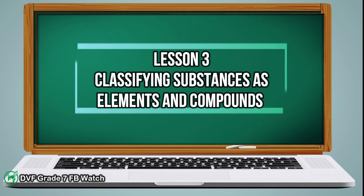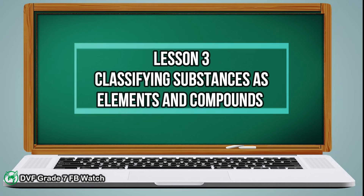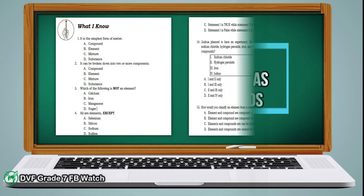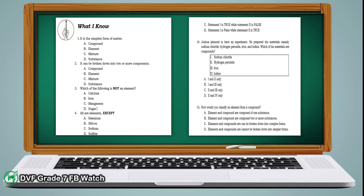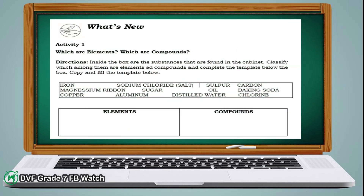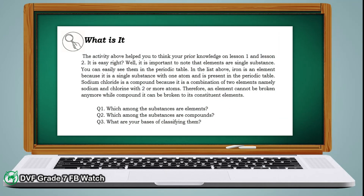Let's proceed to lesson 3, which is about classifying substances as elements and compounds. Let's start with 'What I Know' — from numbers 1 to 15, choose the letter of your answer. For 'What's New,' please answer activity number 1: classify the given substances found inside the box as either elements or compounds. Let's proceed to 'What Is It.' Based on activity number 1, answer the guide questions: number 1 — which among the substances are elements? Number 2 — which among the substances are compounds? Number 3 — what are your bases of classifying them?